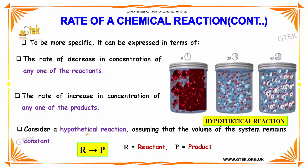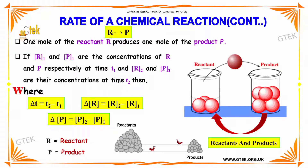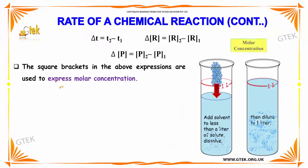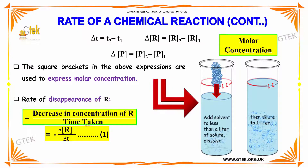Consider a hypothetical reaction, assuming that the volume of the system remains constant — reactant R gives product P. One mole of the reactant produces one mole of the product. If R₁ and P₁ are the concentrations of R and P respectively at time T₁, and R₂ and P₂ are their concentrations at time T₂, then: ΔT = T₂ − T₁, ΔR = R₂ − R₁, and ΔP = P₂ − P₁. The square brackets in the equation are used to express molar concentrations. The rate of disappearance of reactant R is given by the decrease in concentration of R divided by time taken, which is −ΔR/ΔT.